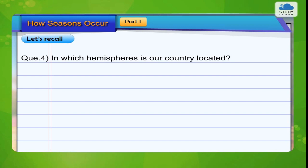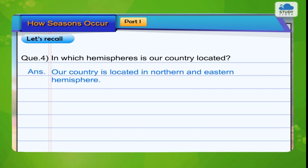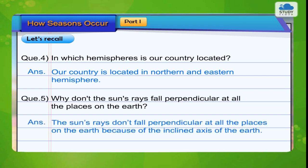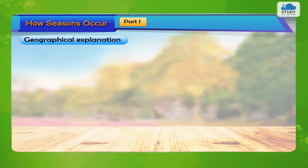In which hemispheres is our country located? Our country is located in the Northern and Eastern Hemisphere. Why don't the Sun's rays fall perpendicular at all places on the Earth? The Sun's rays don't fall perpendicular at all places on the Earth because of the inclined axis of the Earth. Geographical explanation.